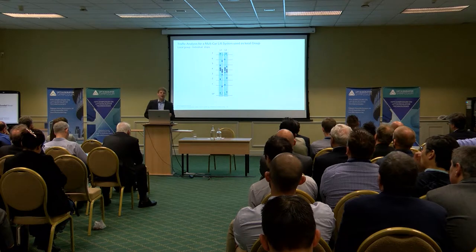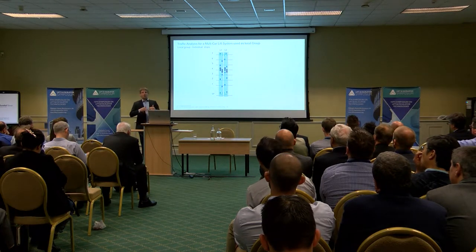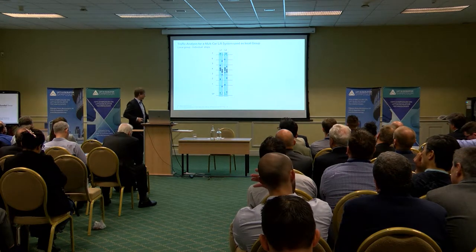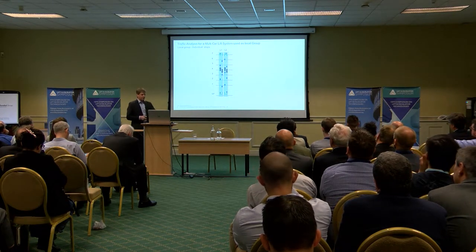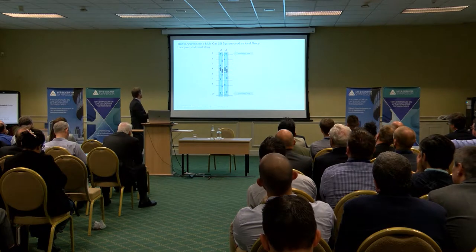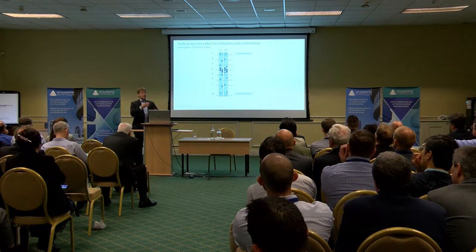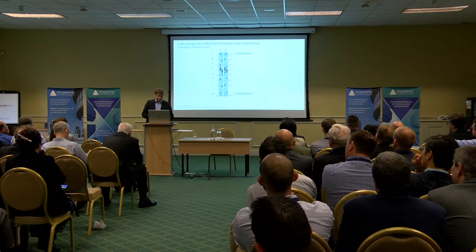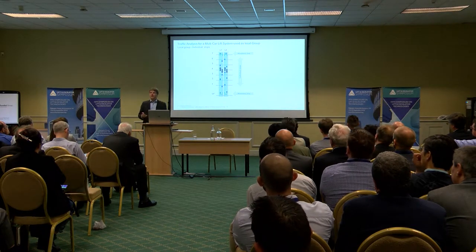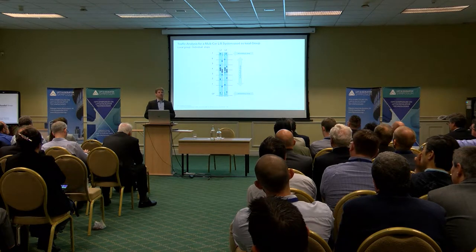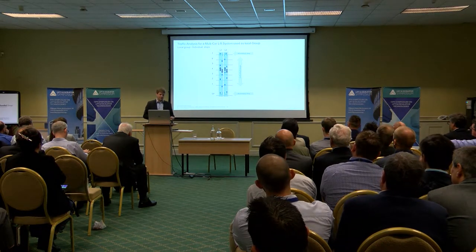But what happens when not all cars are stopping at the same floors? When we use local groups, all cars stop at the bottom floor and at the top floor to exchange to the other shaft. But in between, each car will have individual stops because they transport different passengers with different destinations.